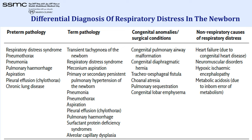For the differential diagnosis of respiratory distress in newborns, you need to know preterm pathologies, term pathologies, congenital anomalies, and non-respiratory causes. Keep this list handy so you can easily correlate your baby with these conditions.